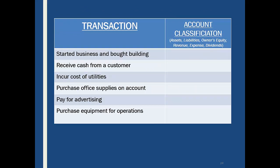Let's look at account classifications. If I received cash from a customer, what accounts are affected? Well, cash came in — cash is an asset. And since they bought a cup of coffee, we also need revenue. Another example: purchasing equipment with cash means cash goes down — an asset — and equipment goes up, also an asset. So assets are affected on both sides. Just give that a whirl and see how you do.